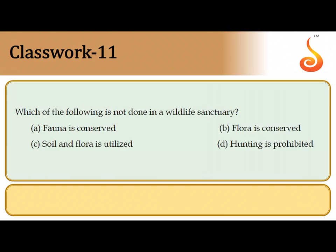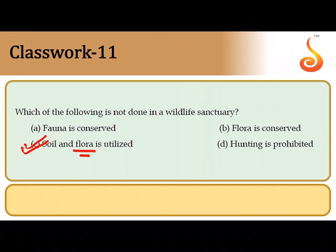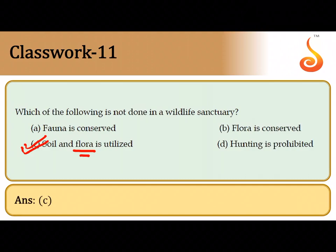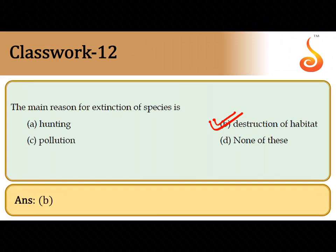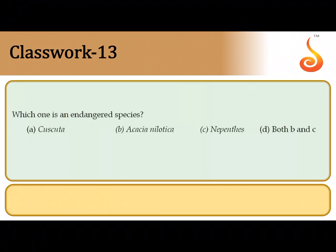The eleventh question asks what is not done in a wildlife sanctuary. In a wildlife sanctuary you will not utilize the soil and flora — you would not disturb the soil or harvest plants because it is exclusively meant for conservation. You don't want to economically exploit it. So the correct answer is option C, soil and flora utilization. The twelfth question: the major cause for biodiversity loss or extinction of species is habitat loss and fragmentation, so option B is correct.